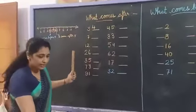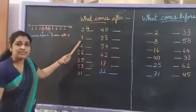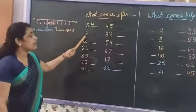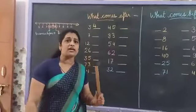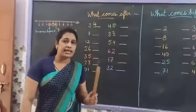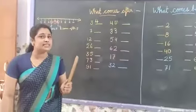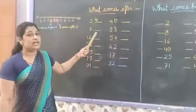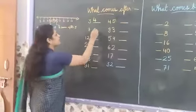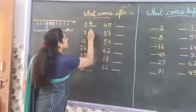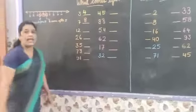And the next number — which number is this? 7. What comes after 7? 8. We have to write 8 here. 7, after, 8.